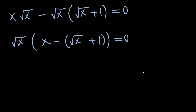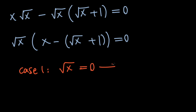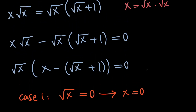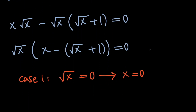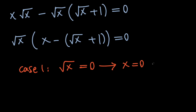Now, notice that we have a product equal to 0. So based on the zero product property, we're going to have two cases. In the first case, we're going to have root x equals 0, which means that x equals 0. And remember that x must be greater than or equal to 0, and 0 is greater than or equal to 0, which means that this is a valid solution.